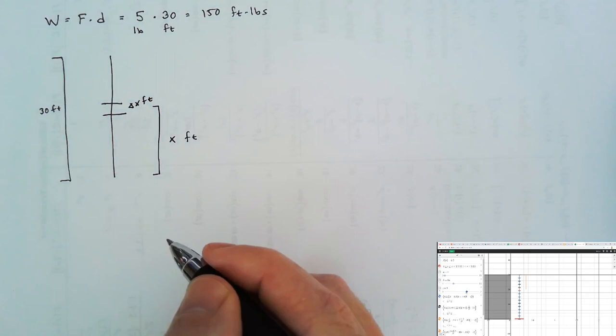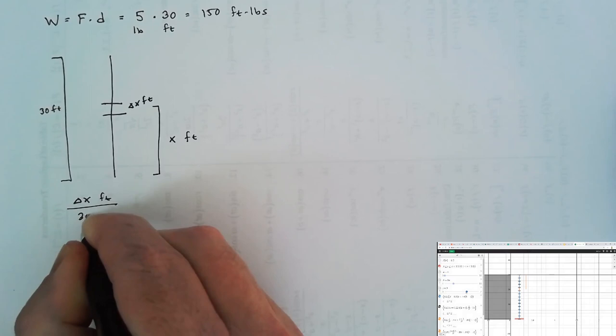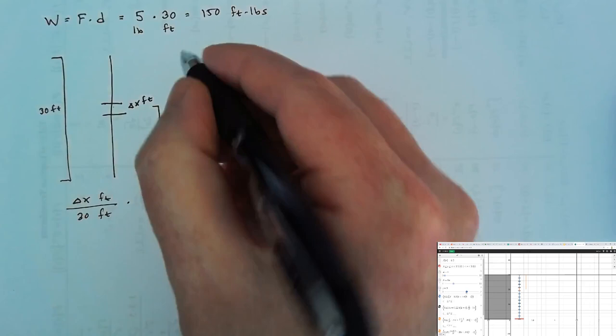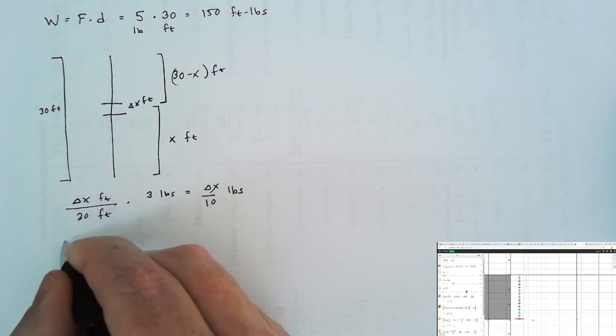This piece of rope weighs delta x feet out of 30 total feet, and if we multiply that by the 3 pounds the rope weighs, we get delta x over 10 for the weight of this little piece of rope. That piece of rope then gets moved 30 minus x feet.